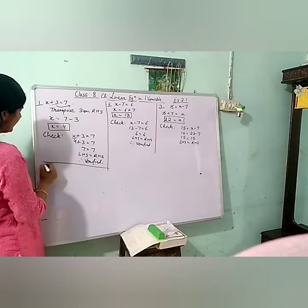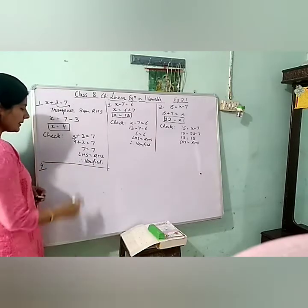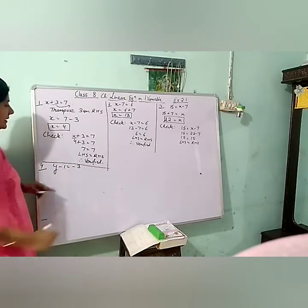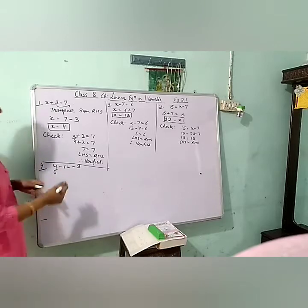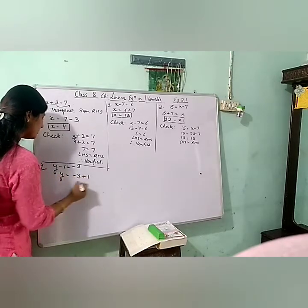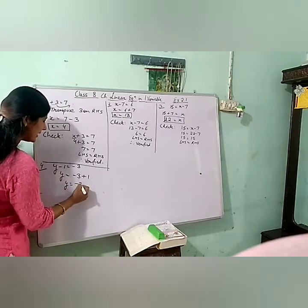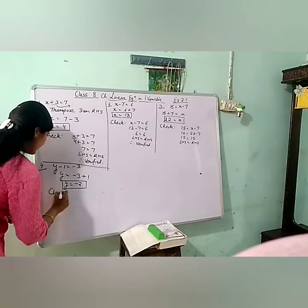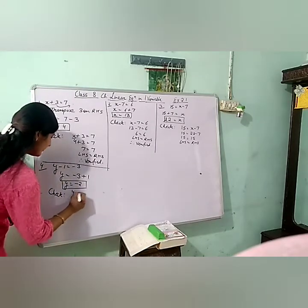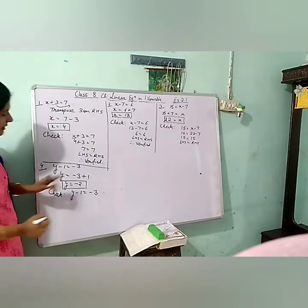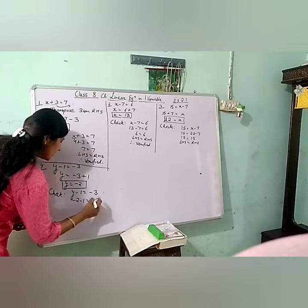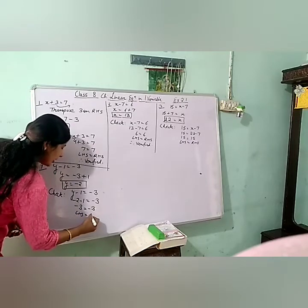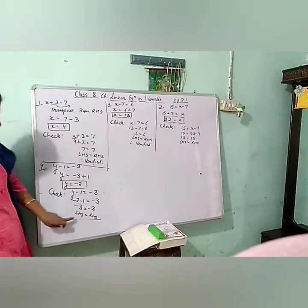Moving to the fourth part: y minus 1 is equal to minus 3. Transposing minus 1, y equals minus 2. Checking: substituting minus 2, we get minus 2 minus 1 equals minus 3 — right hand side as it is, so minus 3 equals minus 3. Left hand side and right hand side are equal — therefore verified.